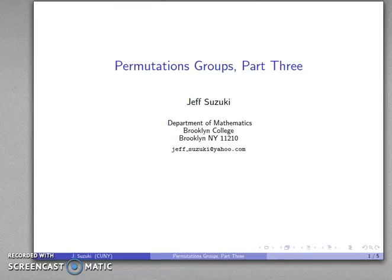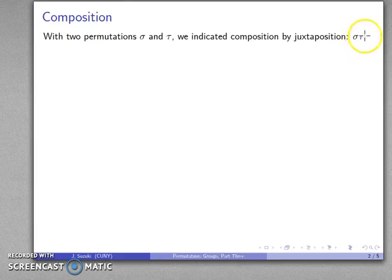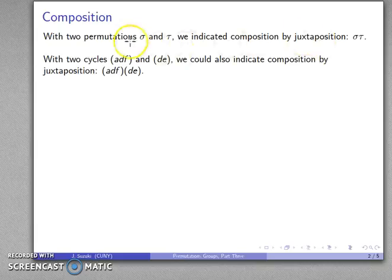Let's play around a little bit more with cycle notation and see what comes of it. One of the things that we want to be able to do is compose two permutations. We indicate the operation of composition by juxtaposition sigma tau, where this is read as apply the permutation tau first, then apply the permutation sigma. So if I have two cycles or more, I can also indicate composition in the same way — I can put them right next to each other, and that says perform this permutation first and then do this permutation.